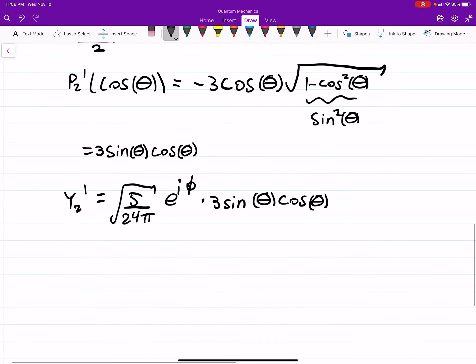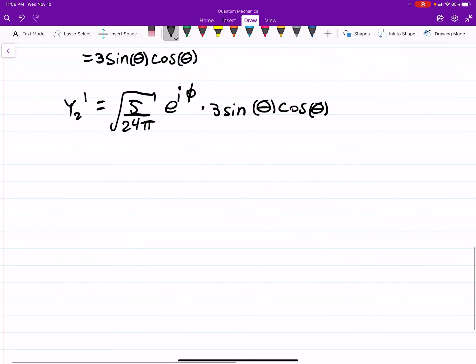So then we can plug all of this in and we'll get the square root of 5 over 24π, e to the iϕ times 3 sine theta cosine theta.